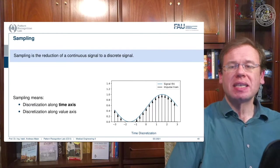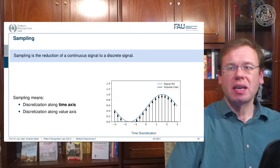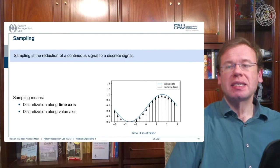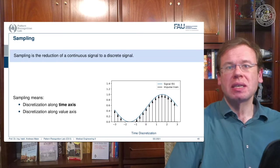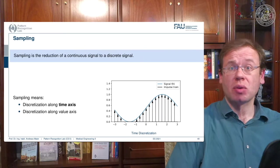So this means that we have to discretize along the time axis. So this is shown here on the right hand side, we have to essentially figure out the continuous signal at certain points. So these are indicated with the arrows here on the right hand side. So we have to sample the signal at these time points.